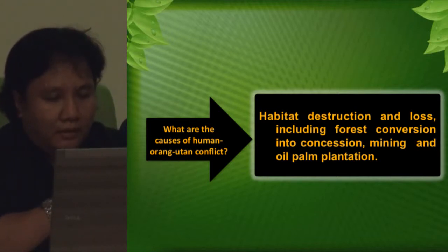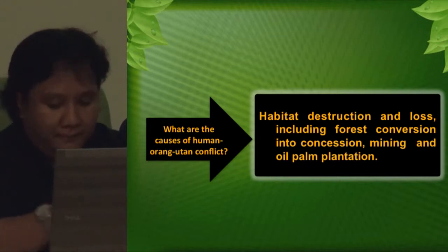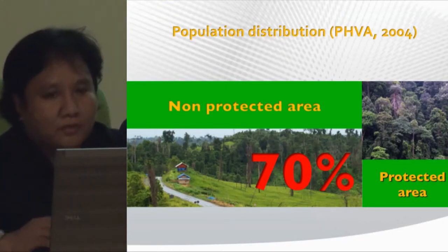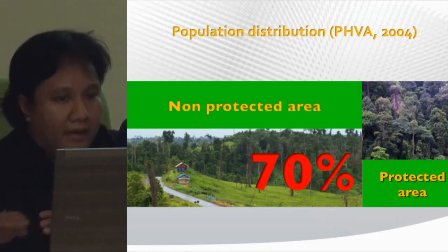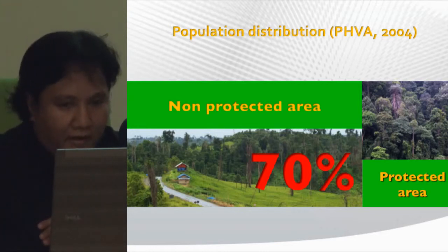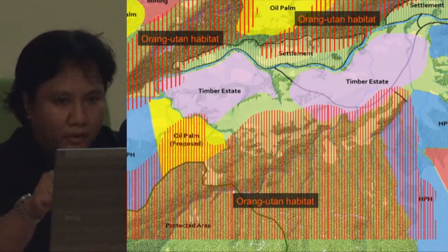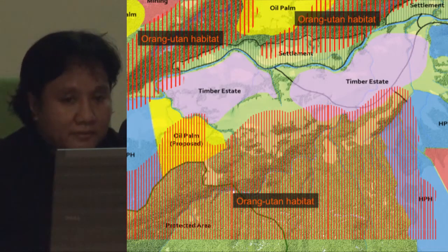The causes of human-orangutan conflict — which also occur with chimpanzees and gorillas — include habitat destruction and loss, including forest conversion into concessions, mining, and oil palm plantations. Sadly, the PHVA in 2004 found that 70% of orangutans live in non-protected areas. This map shows TNC's focus area where orangutan habitat overlaps with multiple-use landscapes.